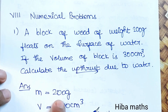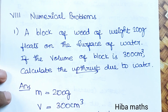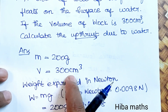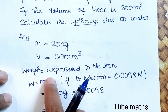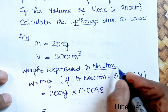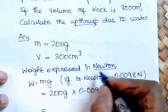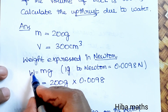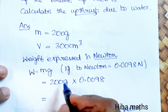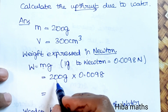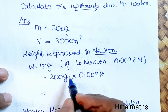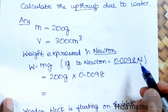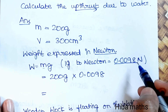Given: mass is 200 grams, volume is 300 centimeter cube. We need to find weight in Newtons. The formula is weight = mg. The mass value is 200 grams, and 1 gram in Newtons is 0.0098.